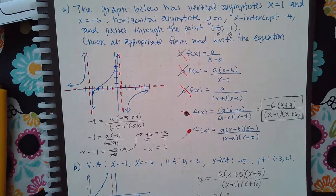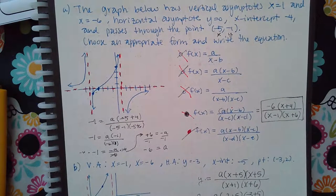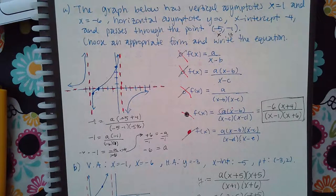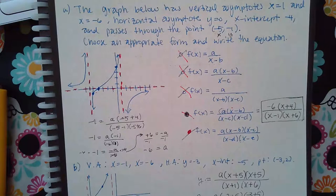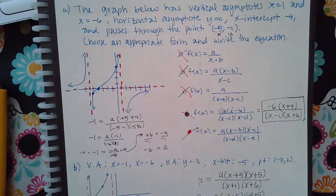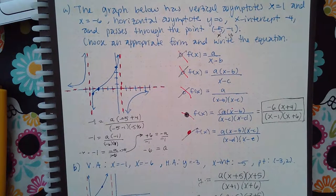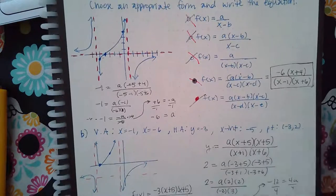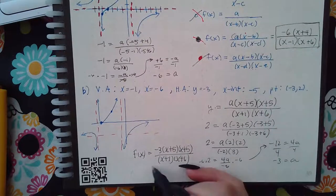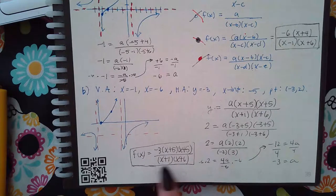I don't know 'a', so I'll use the other given point: y equals 2 and x equals negative 3. Plugging in: a times (negative 3 plus 5) times (negative 3 plus 5) over (negative 3 plus 1)(negative 3 plus 6), which is a times 2 times 2 over (negative 2)(3), giving 4a over negative 6. Multiplying both sides by negative 6: negative 12 equals 4a, so a equals negative 3. The final function is negative 3 times (x plus 5)(x plus 5) over (x plus 1)(x plus 6).